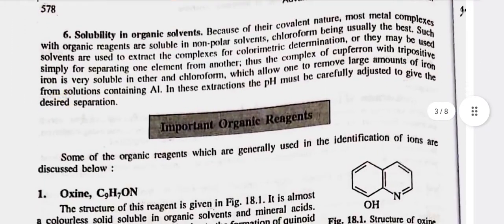Sixth, solubility in organic solvents — because of their covalent nature, most metal complexes with organic reagents are soluble in non-polar solvents, chloroform being usually the best. Such solvents are used to extract the complexes for colorimetric determination, or they may be used simply for separating one element from another. Thus, the complex of cupheron with tri-positive iron is very soluble in ether and chloroform, which allows one to remove large amounts of iron from solutions containing aluminium. In these extractions, the pH must be carefully adjusted to give the desired separation.